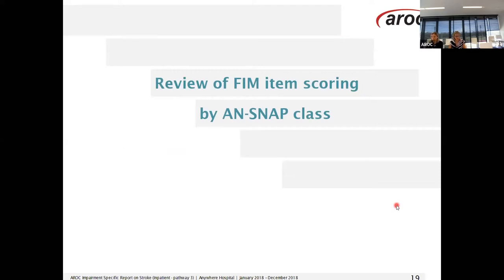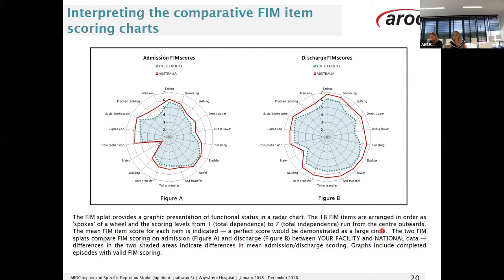Next we look at review of FIM item scoring by ANSNAP class. The FIM splat graphs are a graphic presentation of functional status displayed as a radar chart. The 18 FIM items are arranged as spokes of the wheel, and the scoring levels go from one — total dependence — to seven — total independence — running from the centre outwards. The mean FIM score for each item is indicated: your facility is the green dotted line and your benchmark group Australia is the red line. Here we are comparing the admission FIM scores and the discharge FIM scores as two different figures, presenting an overall view of your service's admission and discharge FIM scores at a high level compared to the national.